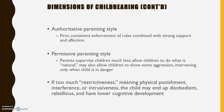We can also look at restrictiveness versus permissiveness. Restrictiveness is often thought of as authoritative — firm, consistent enforcement of rules combined with strong support and affection. Permissive parents supervise the children less, allow children to do what is natural, may allow children to show some aggression, and intervene only when the child is in danger. Too much restrictiveness can mean physical punishment, interference, or intrusiveness.